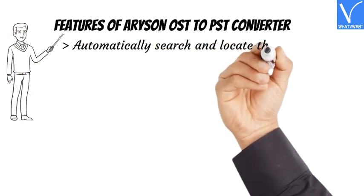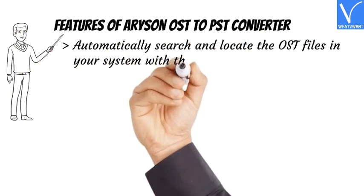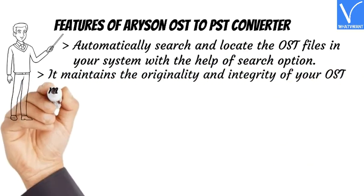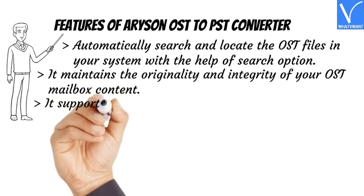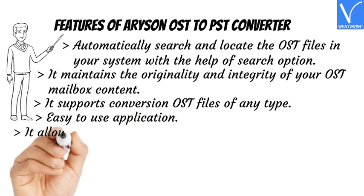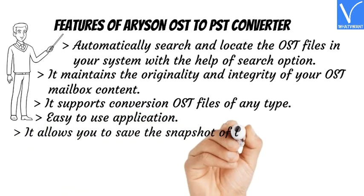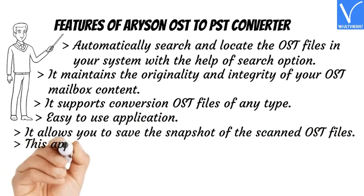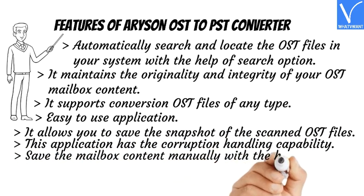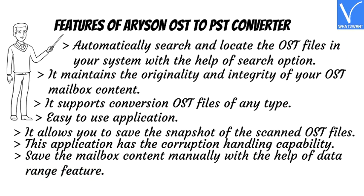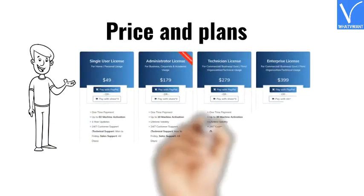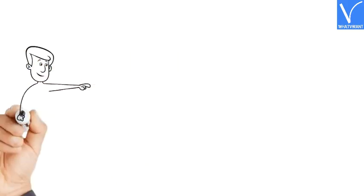Features of Arison OST to PST Converter: Automatically searches and locates OST files in your system with a search option. Maintains the originality and integrity of your OST mailbox content. Supports conversion of OST files of any type. Easy to use — allows you to save a snapshot of scanned OST files. Has corruption handling capability. Save mailbox content manually with the help of a date range feature. The price and plans are exhibiting on the screen. Check the description for the product link.